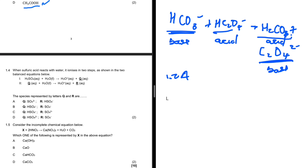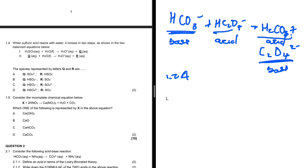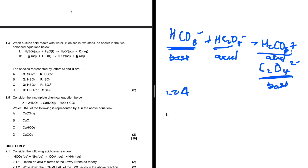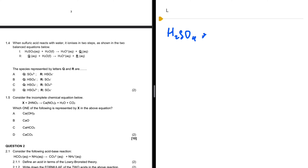Question 1.4: when sulfuric acid reacts with water it ionizes in two steps. The first is H₂SO₄ plus H₂O to give us H₃O⁺ plus Q. The second is Q plus H₂O to give us H₃O⁺ plus R. We need to find what Q and R are. In the first reaction we have H₂SO₄ plus H₂O to give us H₃O⁺ plus Q.